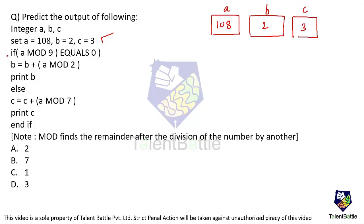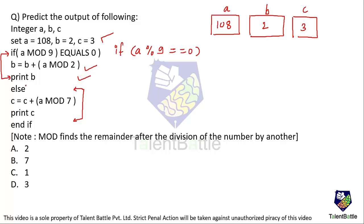There is an if block and an else block. The condition is: if a mod 9 equals 0, then execute two statements — b = b + a mod 2; otherwise the else block executes c = c + a mod 7 and prints c. The note clarifies that mod finds the remainder after division.